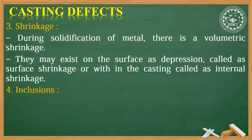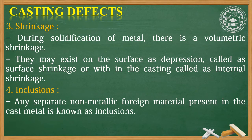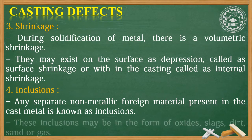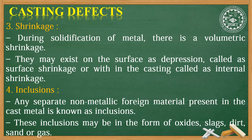Number four is inclusions. Any separate non-metallic foreign material present in the cast metal is known as inclusions. These inclusions may be in the form of oxides, slags, dirt, sand, or gas.